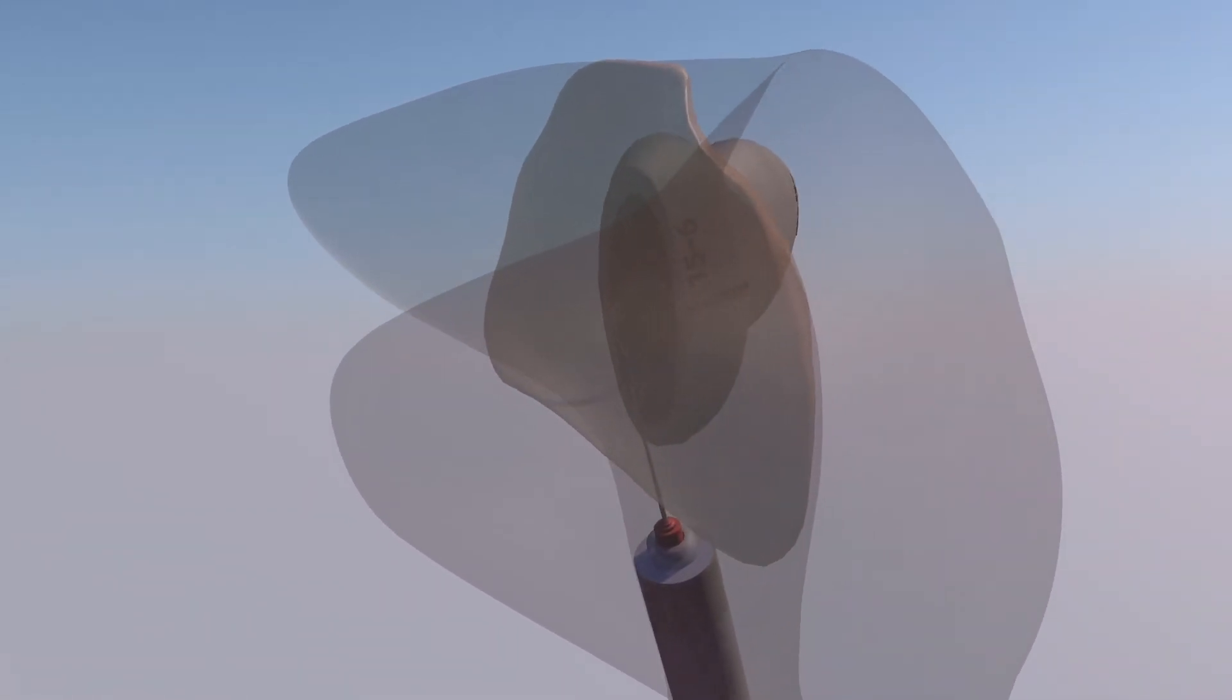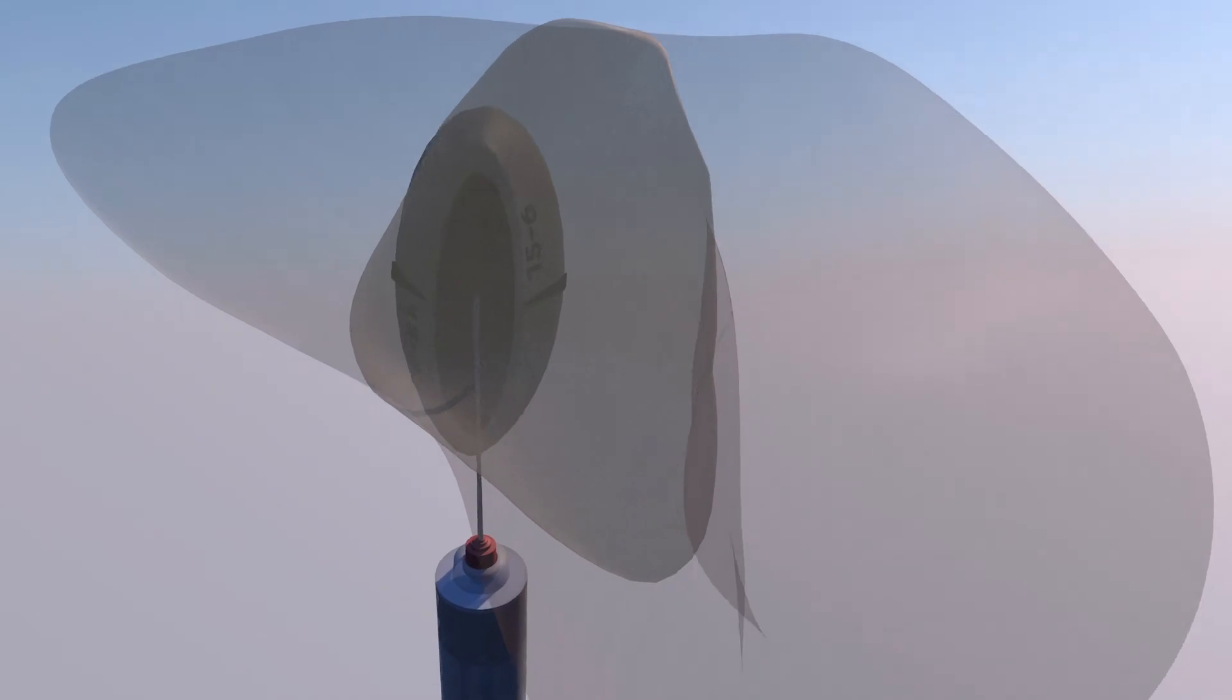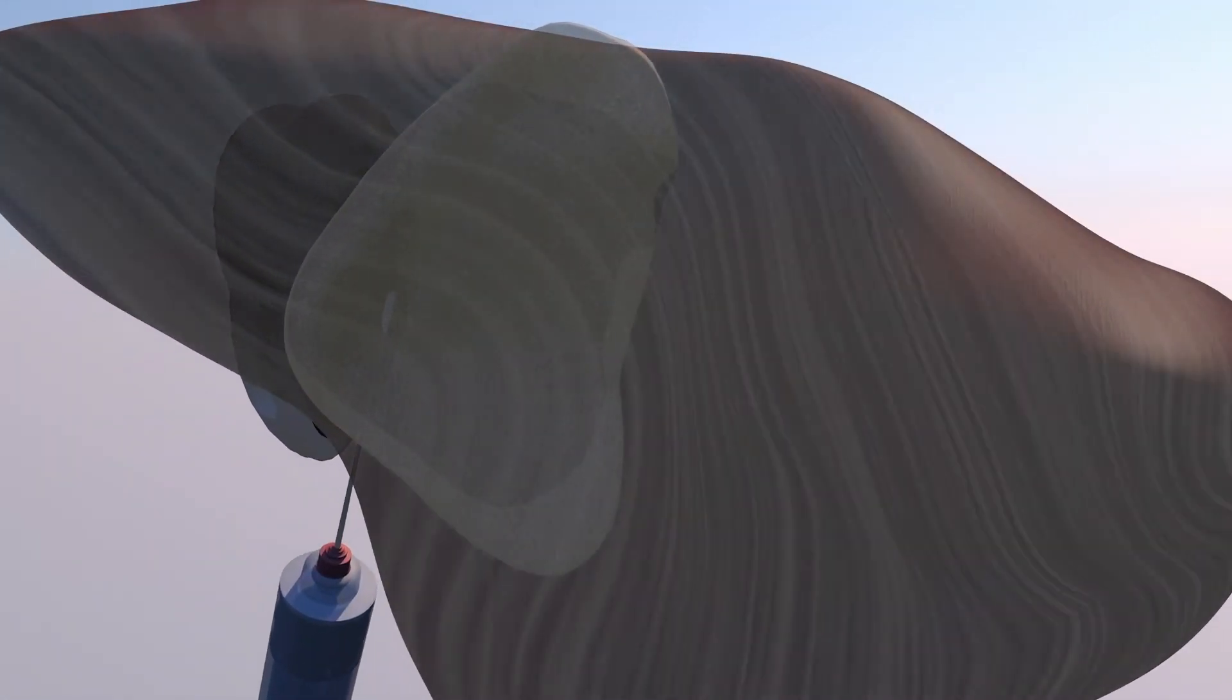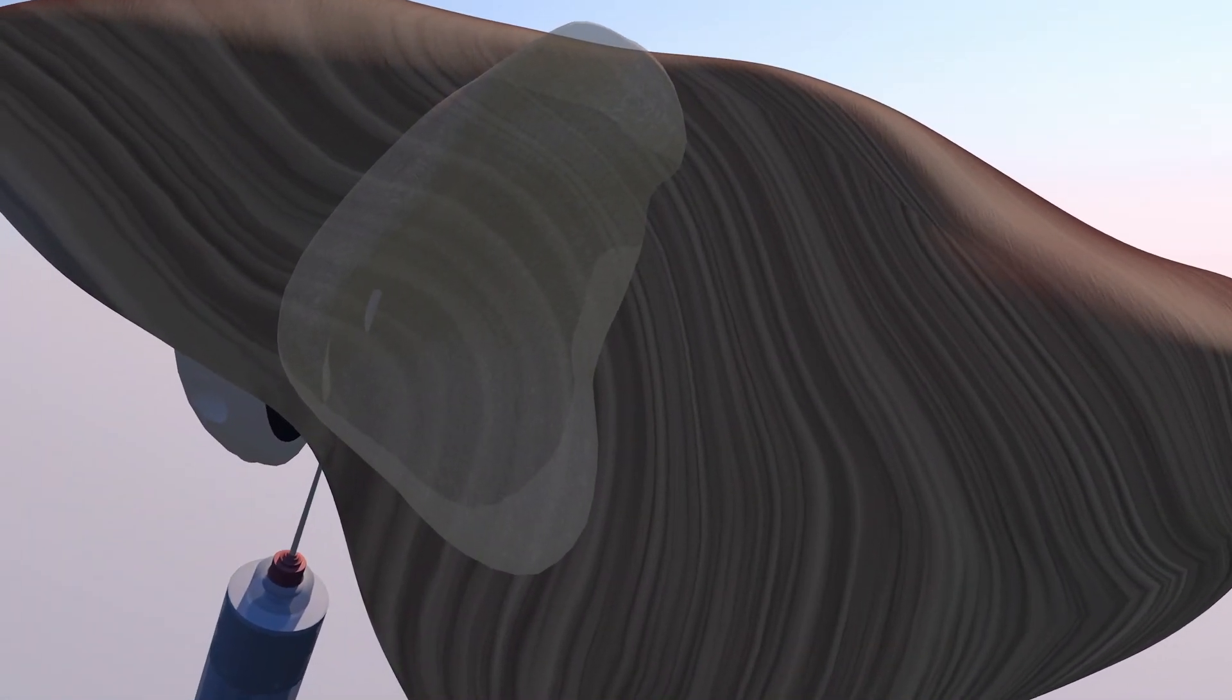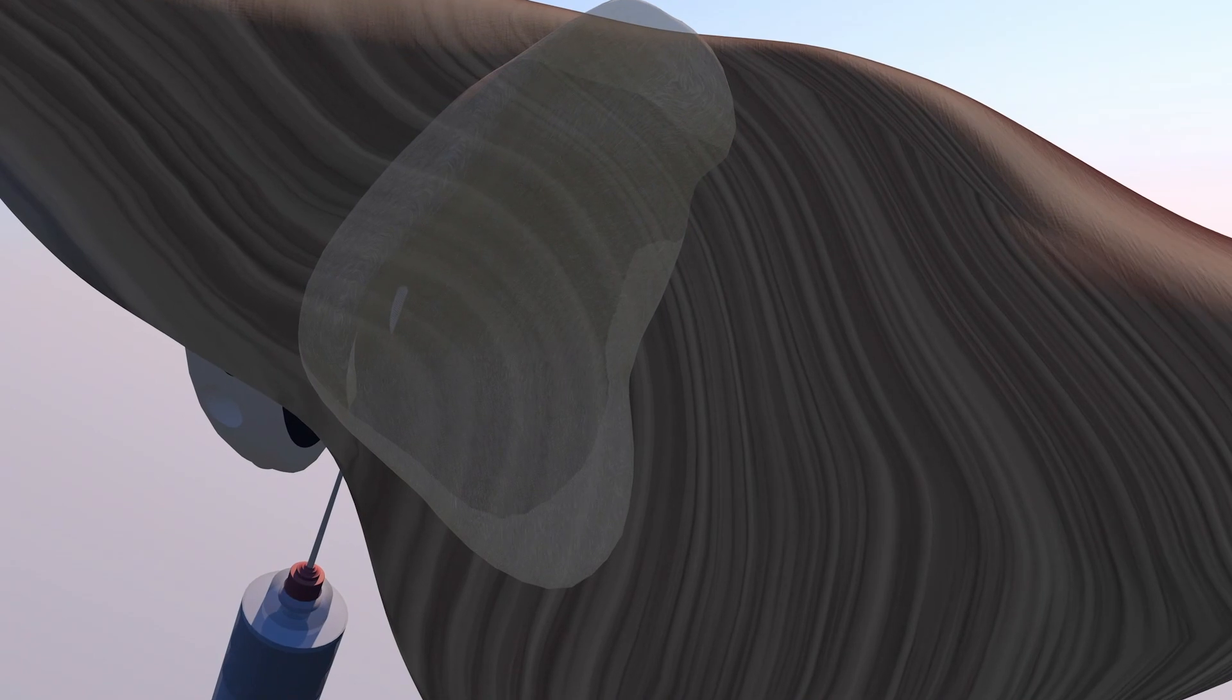And here again is this thickened bursa. And the subdeltoid bursa can spread quite a bit around over the rotator cuff and the proximal humerus. And again, here it is in relation to the deltoid muscle.